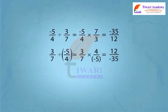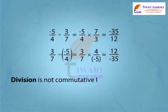Let us check division. If we change the order in division, then we get different answers. Therefore, rational numbers are not commutative under division.